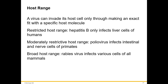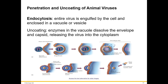Penetration and uncoating happen differently depending on whether it's an enveloped or non-enveloped (naked) virus. A naked virus sticks to the surface of the cell and is brought in by endocytosis — the entire virus is engulfed. If the virus has an envelope, the envelope fuses with the cell membrane, and only the nucleocapsid enters the cell; the envelope stays fused into the membrane.